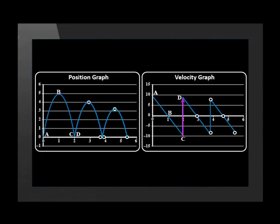The ball hits the ground. The ground applies an upward force on the ball, accelerating it upward for the time the ball touches the ground. This causes the ball to leave the ground at a velocity of a little less than 10 meters per second upward for the start of the next bounce.